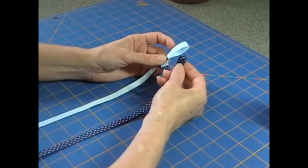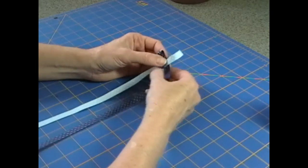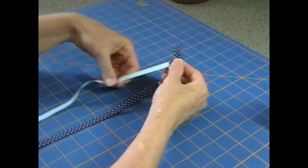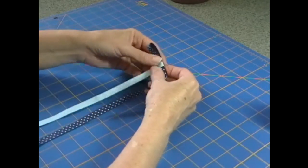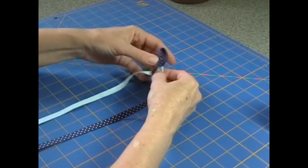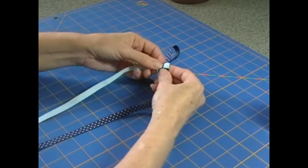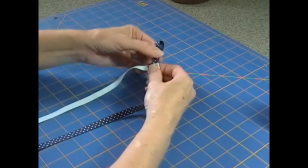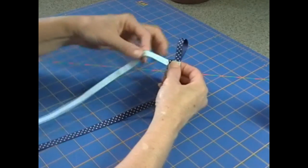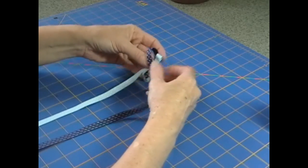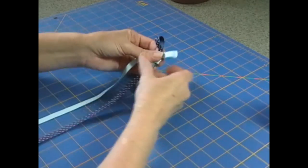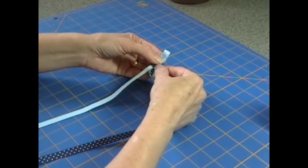And really all you're going to do is go back and forth repeating that for the entire length of how long you want it to be. Each time you're going to pull the ribbon tight. Not over tight because you don't want it to be puckery but snug. And pull the dark blue tight.